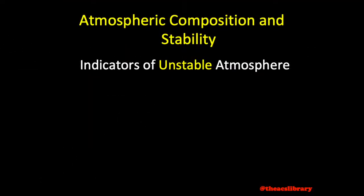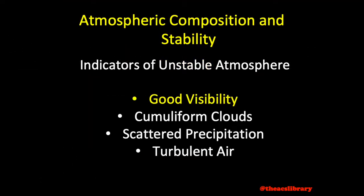Unstable air may be indicated by the opposite: good visibility, cumuliform clouds, scattered showers, and rough or turbulent air. Thunderstorms 10 times out of 10 are a sign of violently unstable air and should be avoided by a minimum of 20 miles for turbulence and hail. This concludes today's video over atmospheric stability and composition.